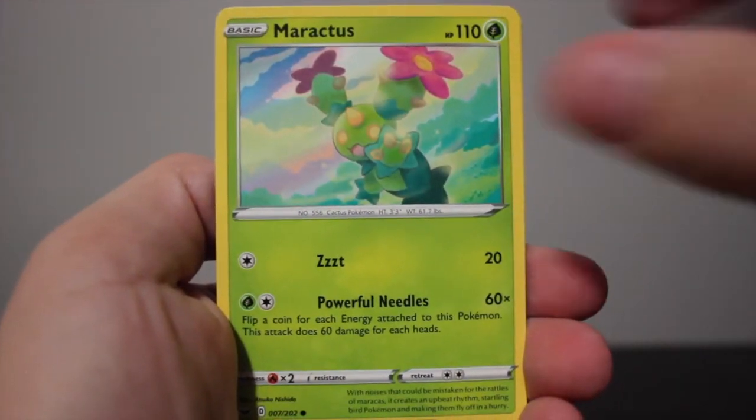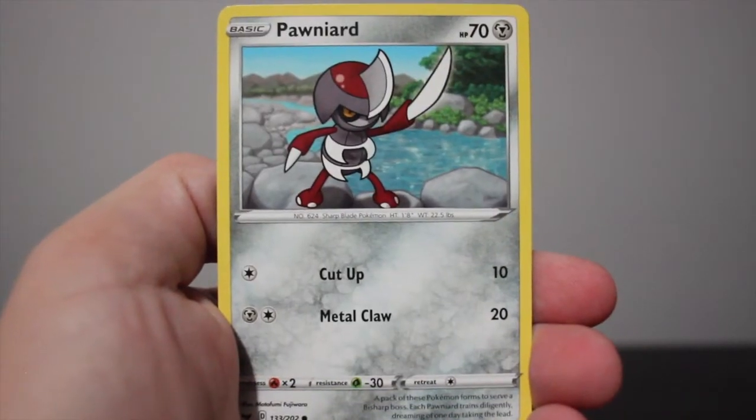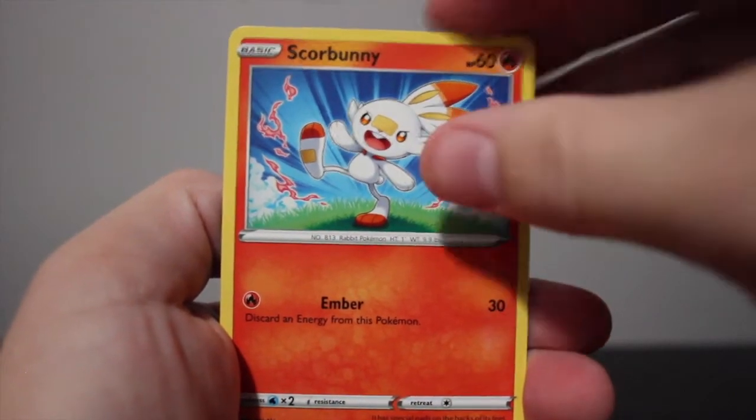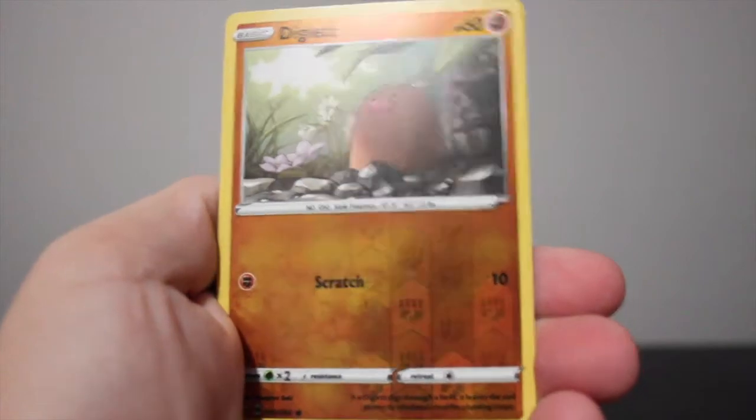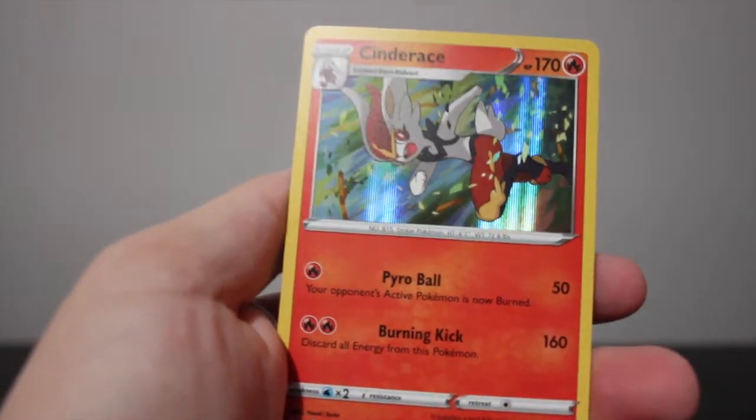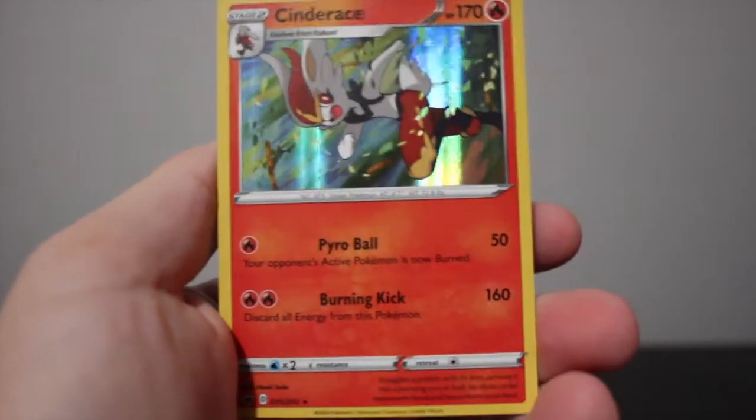A Rotom Bike, oh my god three trainers in a row, that's kind of wild. Maractus, Mudbray, Bunnelby, Scorbunny, Nickit, reverse Diglett. And we got a Cinderace holo from the very first pack, that's pretty good.